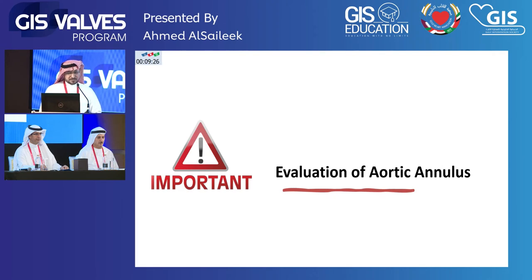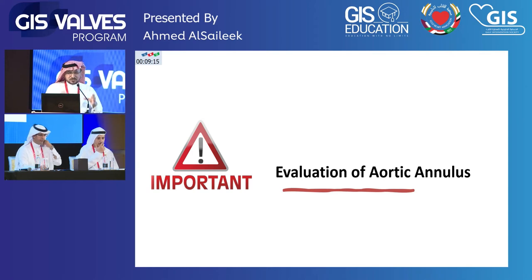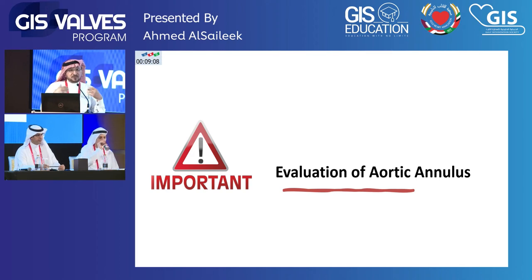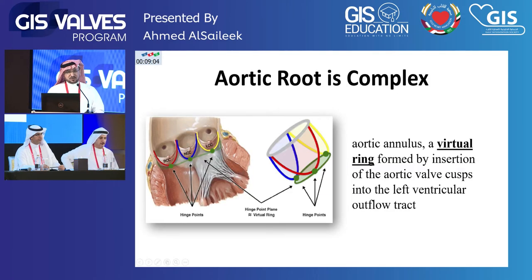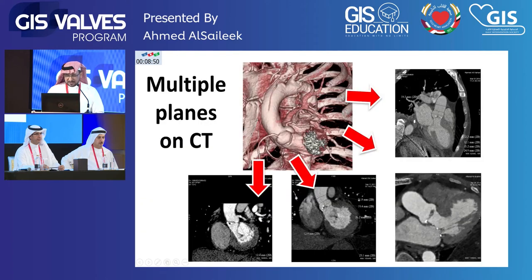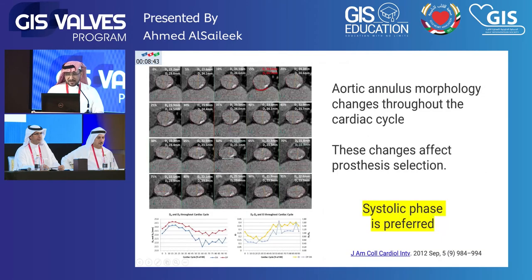One of the most important parameters evaluated by CT is the aortic annulus, because the aortic annulus measurement is the most important one to determine if a valve is suitable for a given annulus — this prevents a lot of paravalvular leak. The aortic annulus is a virtual ring; it requires very high spatial resolution and 3D anatomical delineation to visualize. CT provides multiple planes to see the aortic annulus, and since it changes with systole and diastole, we always use the systolic phase where the least motion occurs.